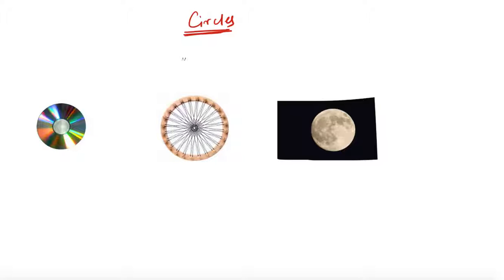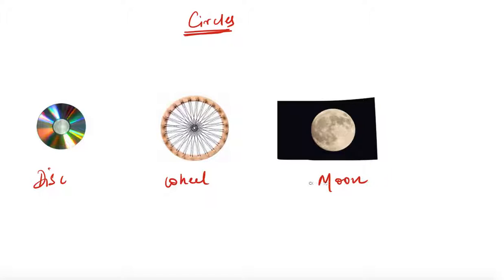Before coming to that, let us first try to understand what circles basically are and how we define them. Can you recall these objects shown on the screen? You can see a disc, a wheel, and the well-known object, the moon.